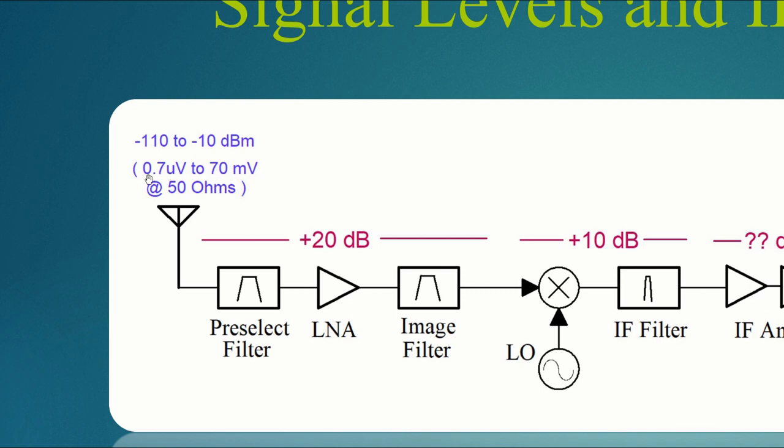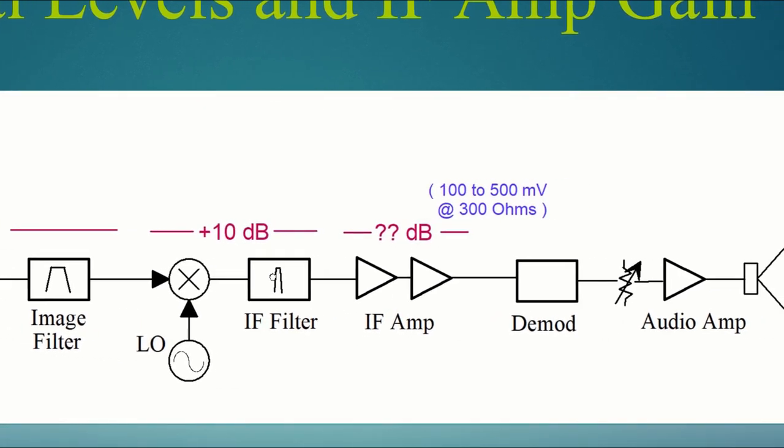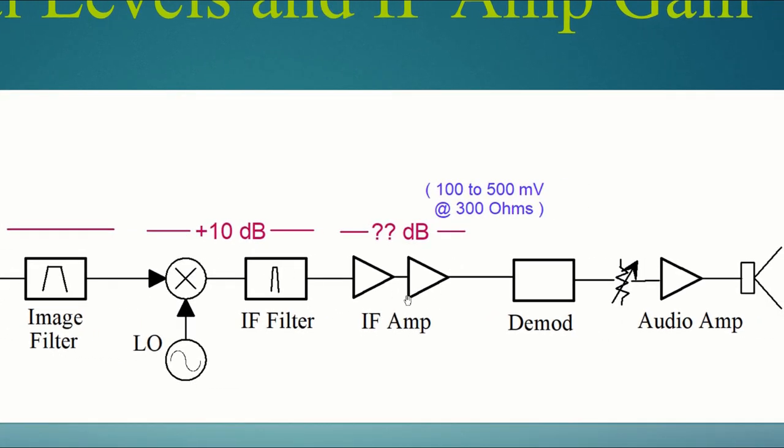Now, obviously, the weakest signal, 0.7 microvolts, is going to determine how much gain we ultimately need. Now, we already have some gain. We have 20 dB in the low-noise amplifier. And if we did our mixer well, we've got about 10 dB in the down conversion. The question is, how much gain do we need here in the IF amp? And the answer can be found by considering how much signal level needs to go into the demod. That depends on the particular circuit design. But in our case, we need somewhere between 100 and 500 millivolts.